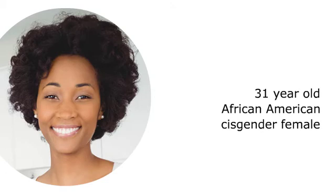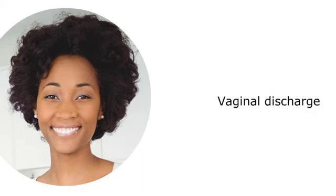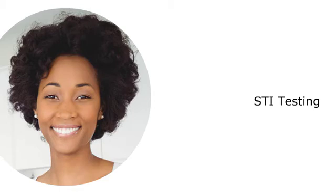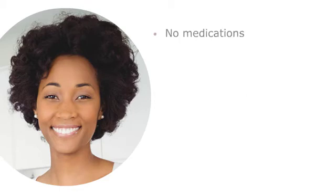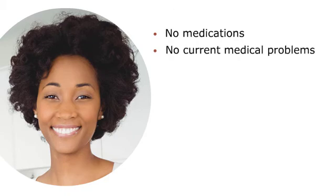Sandra is a 31-year-old African-American cisgender female. She presents to your Sexual and Reproductive Health Clinic with vaginal discharge, identifying STI testing as the primary reason for her visit. Reviewing her new patient health history form, you note that she indicates preference for she/her pronouns. She works full-time as a paralegal, has health insurance, does not take any medications, and does not have any current medical problems.